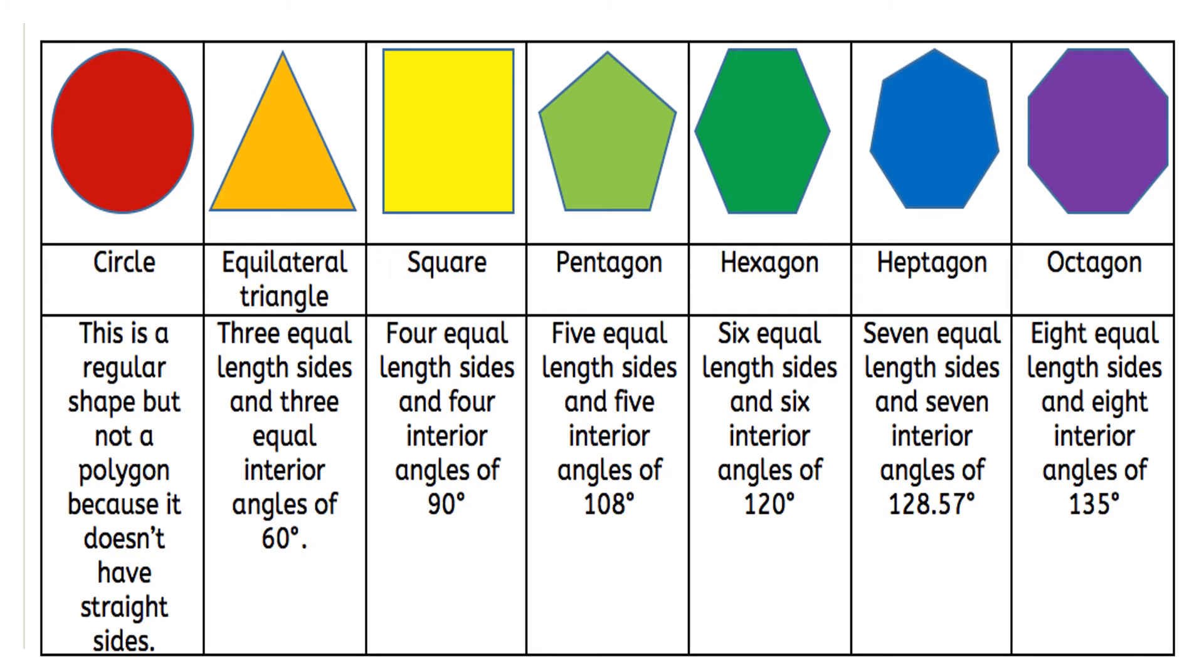Pentagon: five equal length sides and five interior angles of 108 degrees. Hexagon: six equal length sides and six interior angles of 120 degrees.